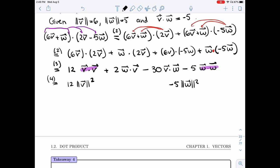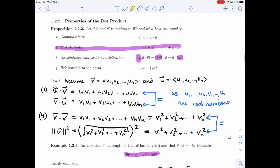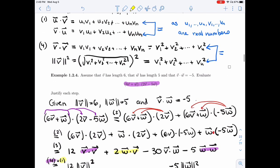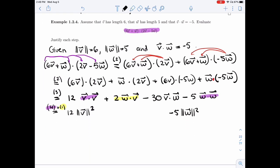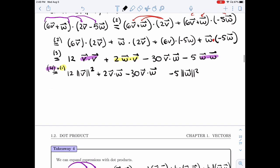Now in those middle two terms, I'm going to switch them by using property one. That tells me that the dot product is commutative. So I can switch W dot V and write V dot W, and here I'll write V dot W again. Now you could simplify the two terms and write minus 28 times V dot W. I won't do it. It's right either way.